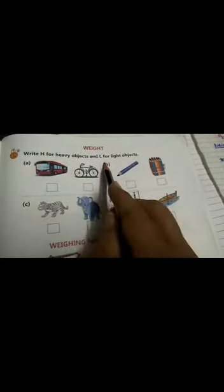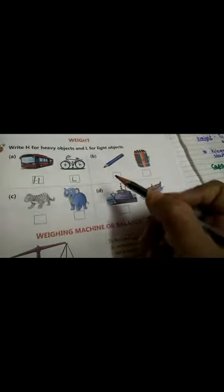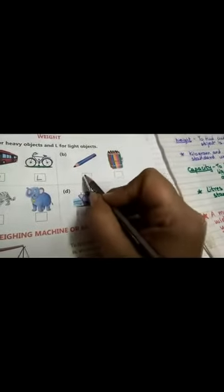Now let's see how do we find out what is heavier or lighter? Now here the pictures are given. Now looking at the pictures, can you find out which object is more heavier or will have more weight and which will be lesser? Now a bus and a cycle. Which one will be more heavier? Yes, a bus will be heavier. So we write H for heavy objects and L for lighter objects. Similarly, next one. There is one pencil and a lot of colour pencils. So now which will be more heavier? One pencil or more crayons? Yes, this will be lighter and this will be heavier.